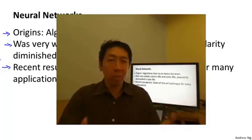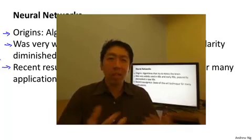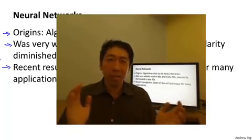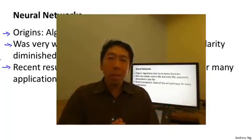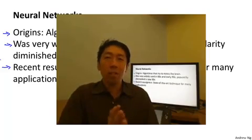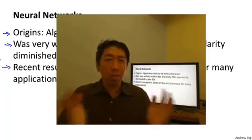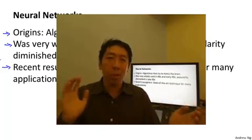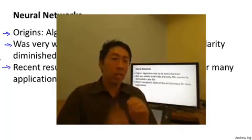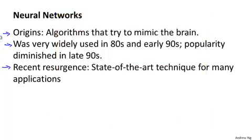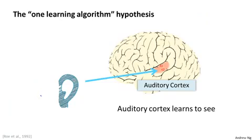It seems like if you want to mimic the brain you have to write lots of different pieces of software to mimic all of these different fascinating things that the brain does. But there's this fascinating hypothesis that the way the brain does all of these different things is not with a thousand different programs. Instead, the brain does it with just a single learning algorithm.